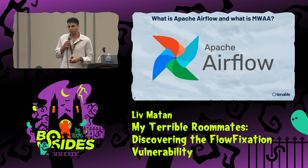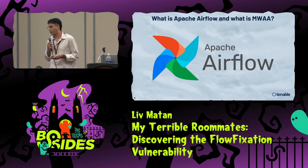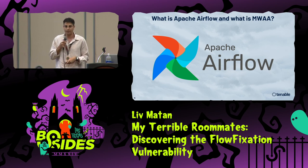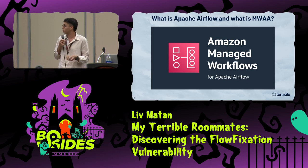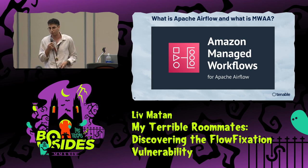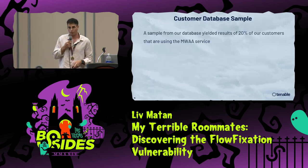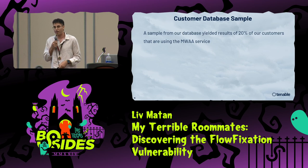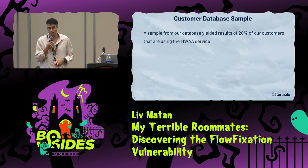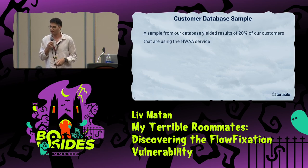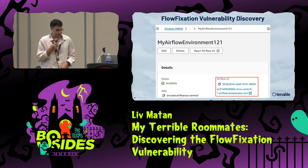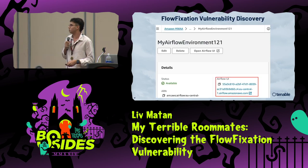So let's get started. What exactly is Apache Airflow? Apache Airflow is an open-source system that handles data pipelines and workflows. In AWS, you have the managed version: Amazon Managed Workflows for Apache Airflow (MWAA). We did a sample in our company at Tenable and saw that 20% of the customer database we have are using the MWAA service, so the vulnerability is rather popular and impactful. Let's dive into the flow fixation vulnerability.